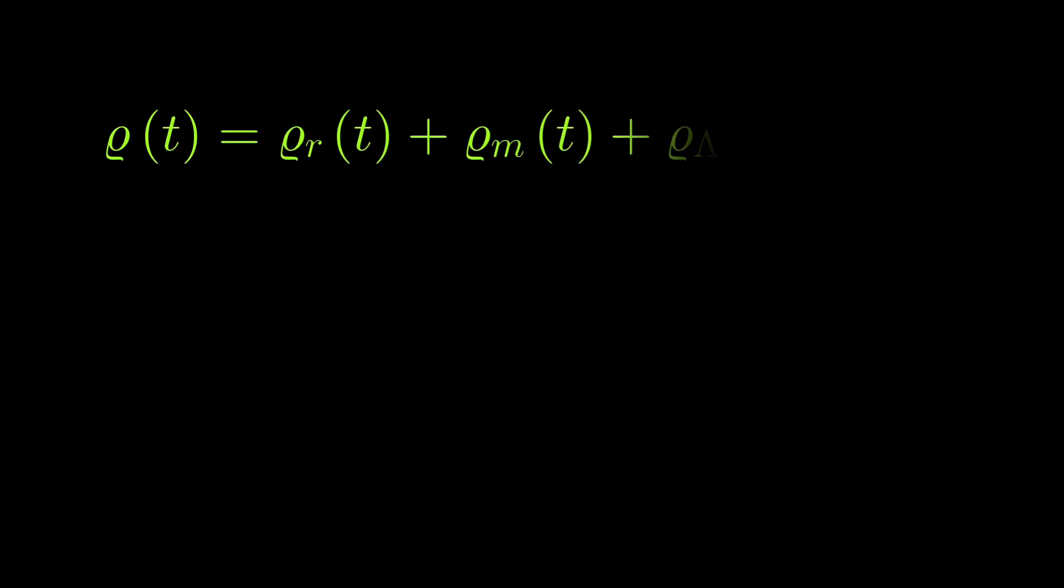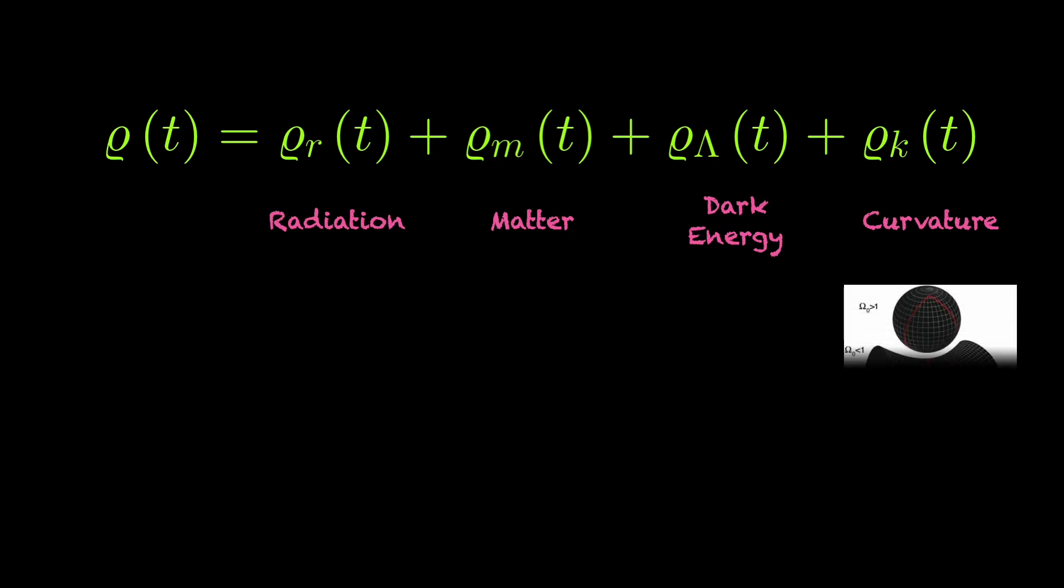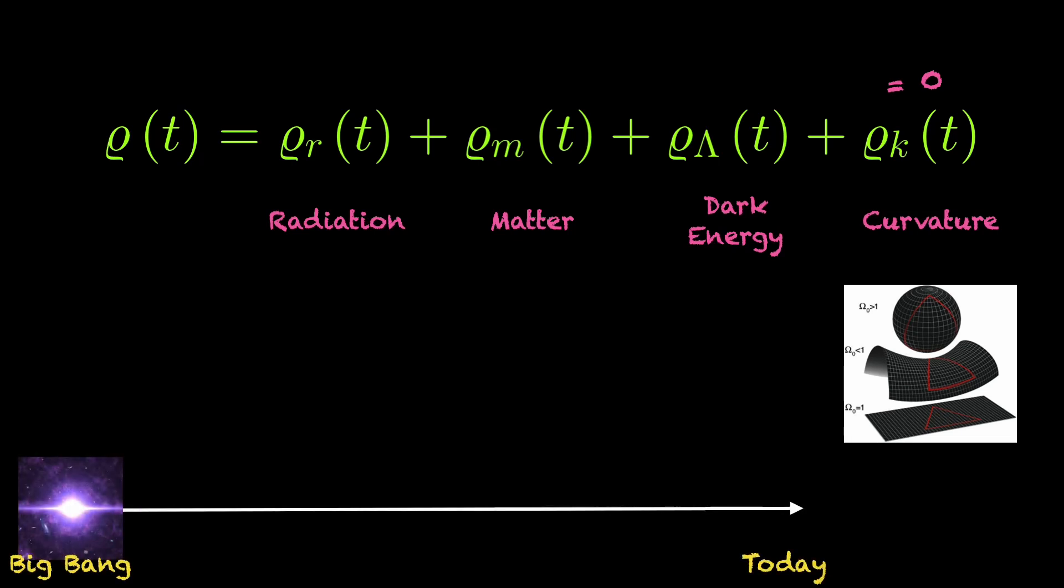The energy density consists of radiation, matter, which includes normal baryonic matter as we know it and dark matter, dark energy, and curvature energy. The curvature energy density corresponds to a universe with a global curvature. Examples would be a spherical universe or a universe shaped like a saddle, or a flat universe. And according to current research results, the universe is flat, so the curvature density can be set to zero. Then there's the radiation density, so the energy density coming from all the photons floating through the cosmos.